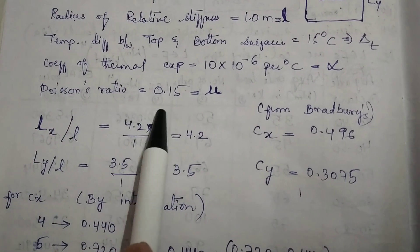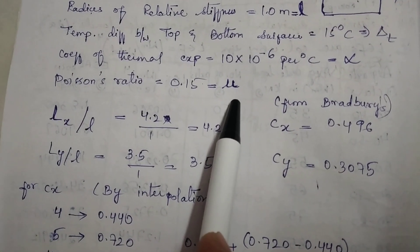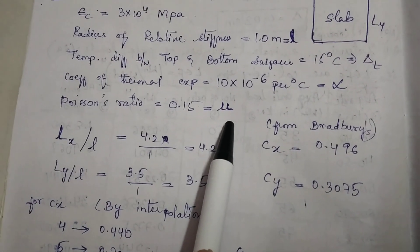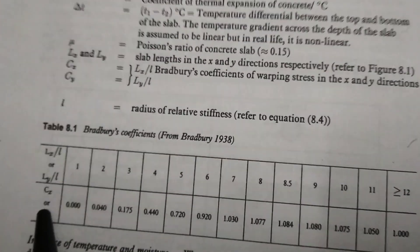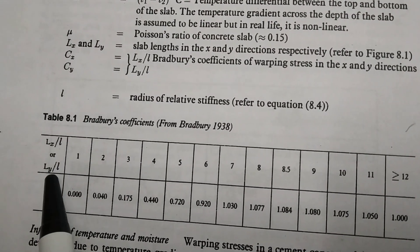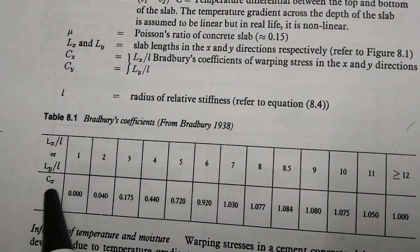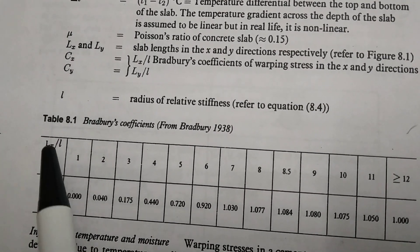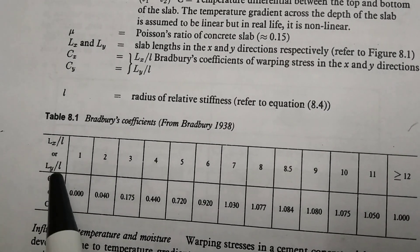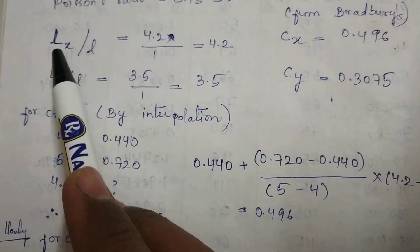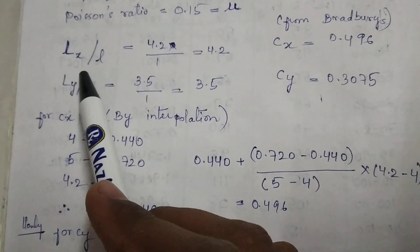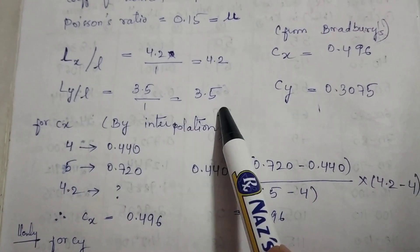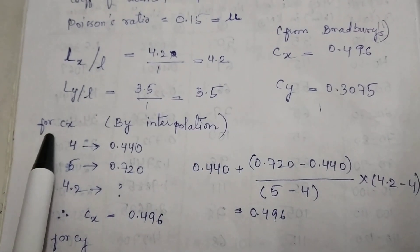According to Bradbury's coefficient method, we need to calculate Lx/l and Ly/l. For Cx, we calculate Lx/l, and for Cy, we calculate Ly/l. In our problem, Lx = 4.2m and l = 1m, so Lx/l = 4.2. Similarly, we calculate Ly/l. To find Cx for the value 4.2, we need the exact coefficient.